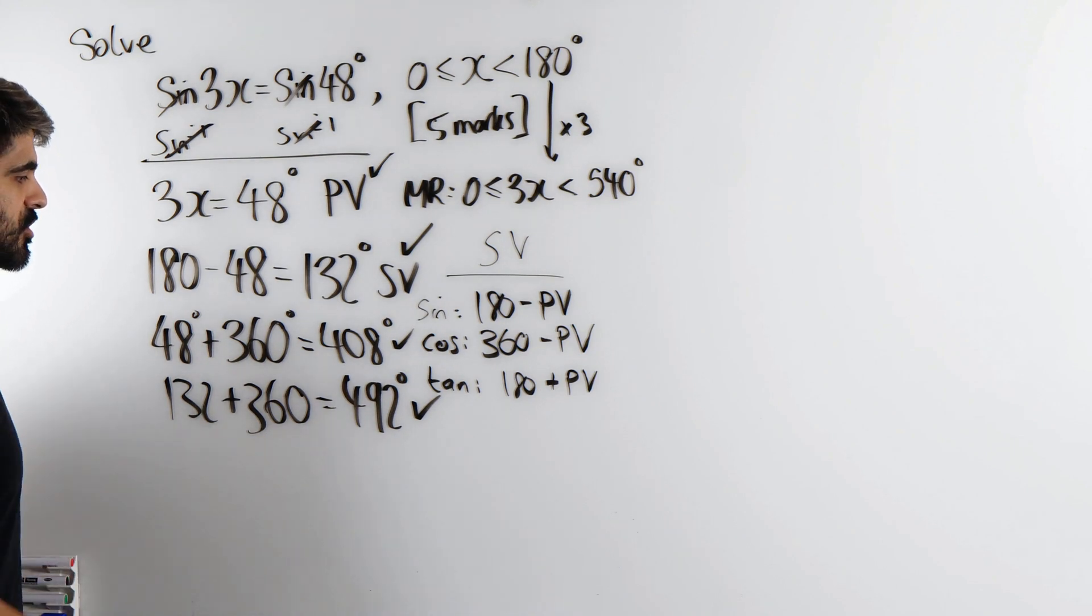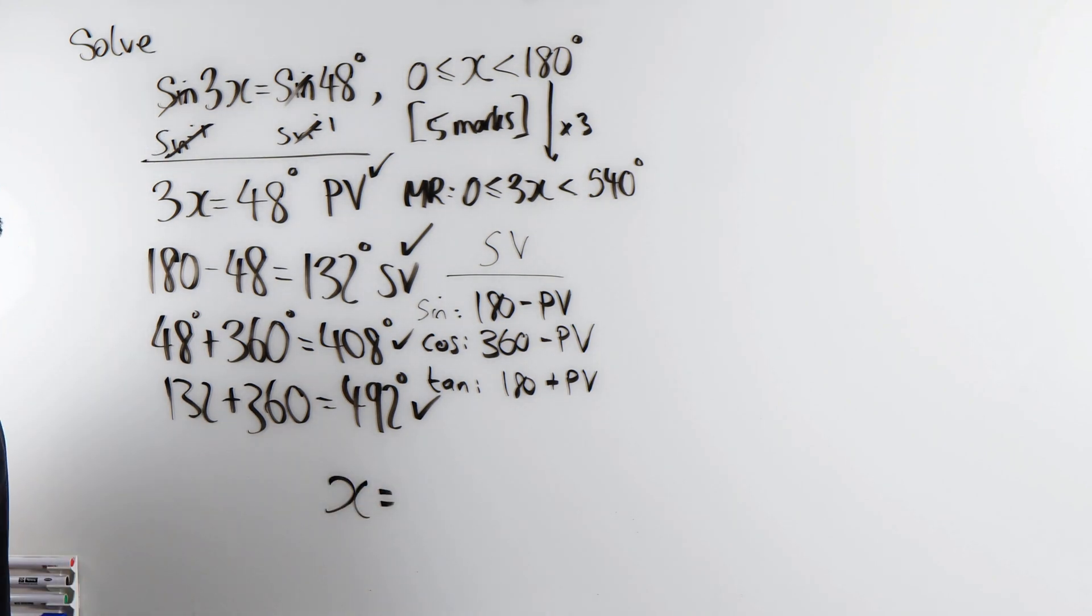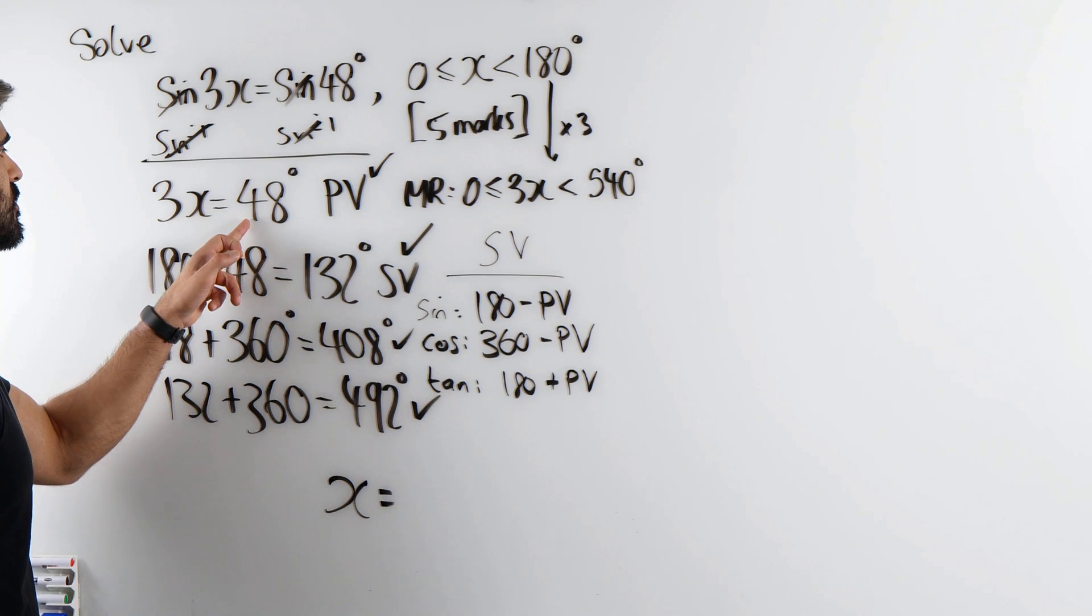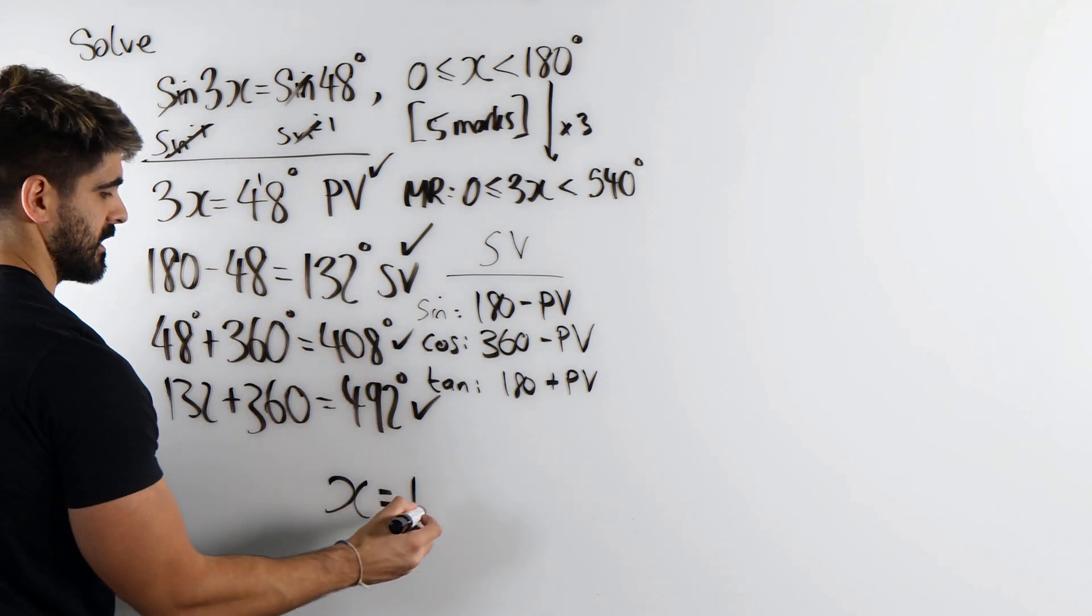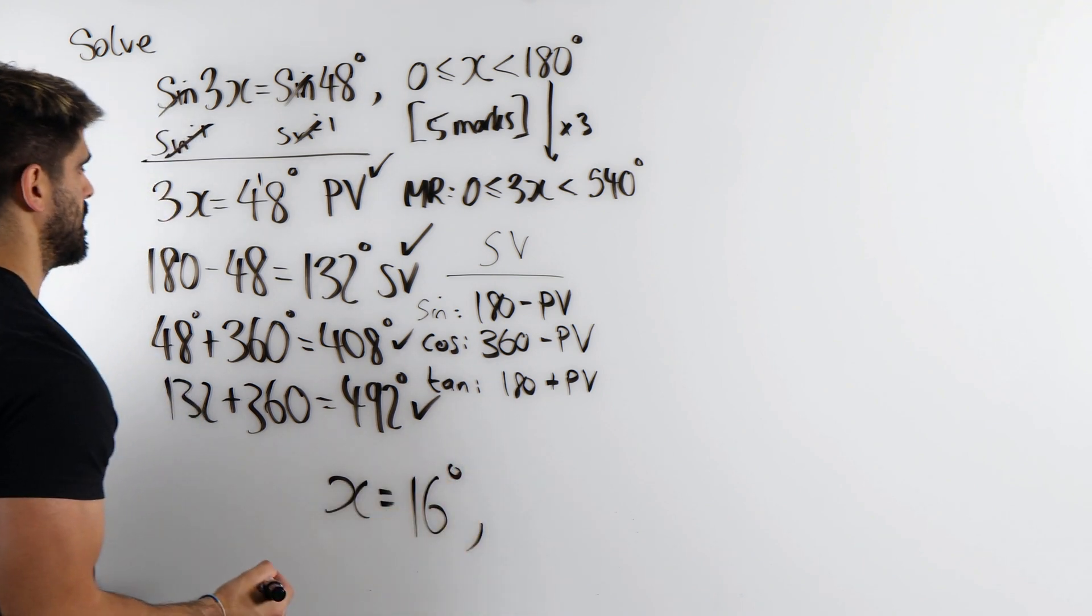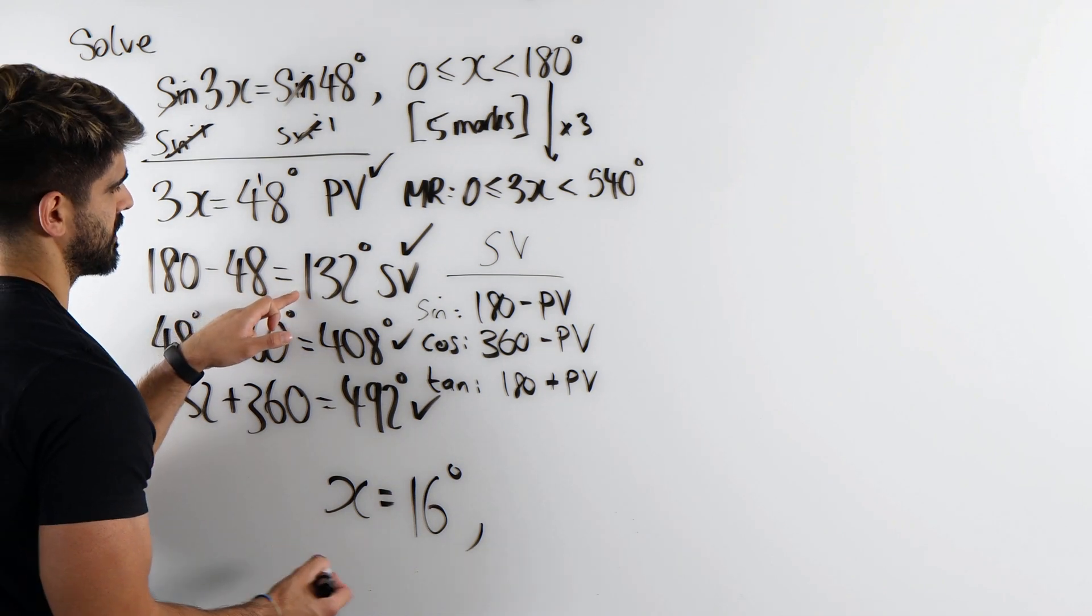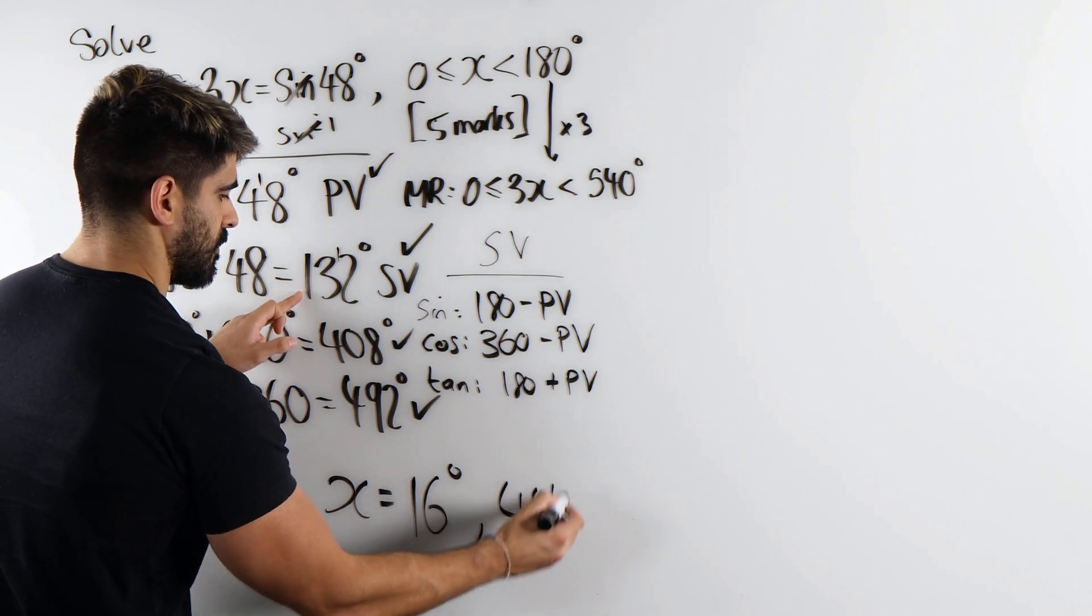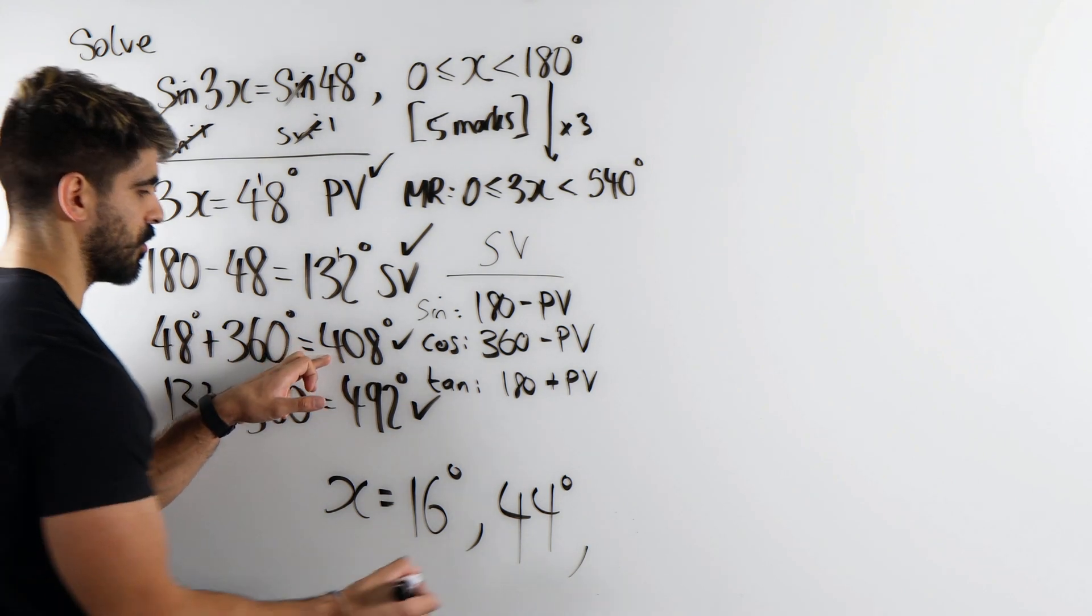Now to find our x, we're going to divide all of these values by 3. This is where it's just a bit tedious. 3 goes into 4 once with a remainder of 1, then 6, so 16. Then this one, 3 goes into 13 four times with a remainder of 1, so 44.